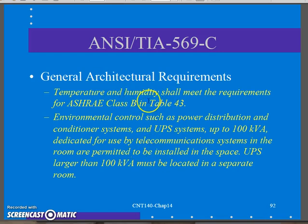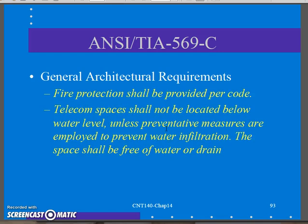Temperature and humidity were already mentioned — yes, you should have climate control in there pretty much year-round. They talk about environmental controls such as UPS, and they give a limit on how much UPS equipment should be in the closet. If you go over certain values, it should be located in another room, probably where your generator and other things are. Fire protection: any local fire codes should be followed in your closet as far as what's located in there, and that does change by county.